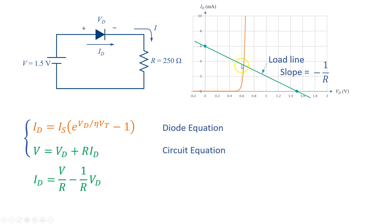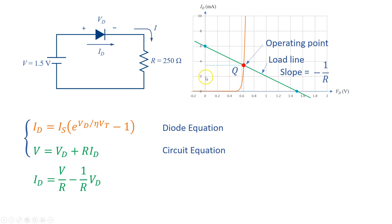This is a line with a negative slope of minus 1 divided by R, which is called the load line. The intersection of the load line and the diode IV characteristics is our answer. It is called the operating point and is usually shown by Q.